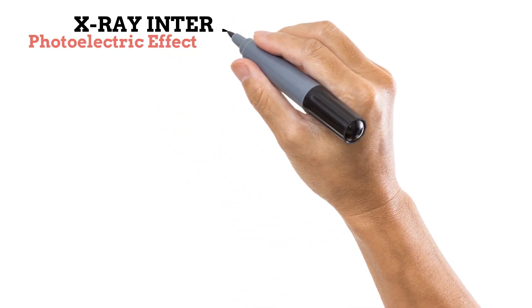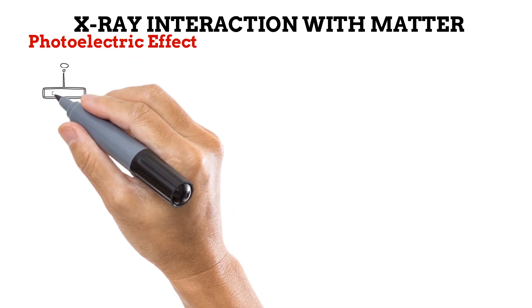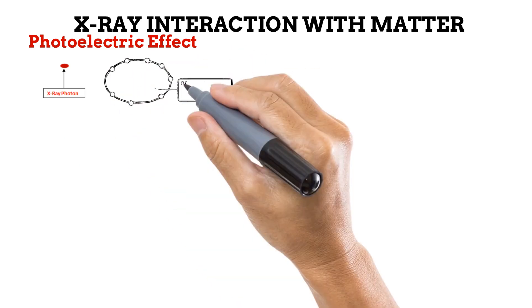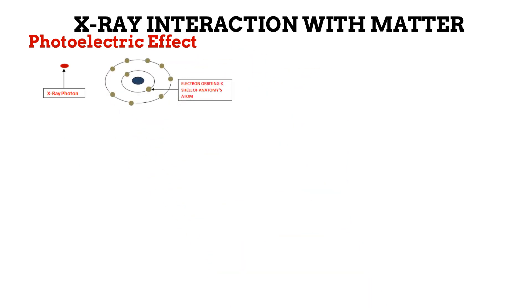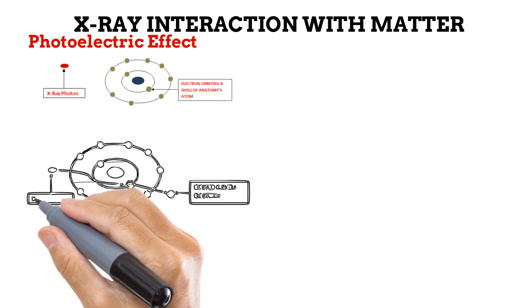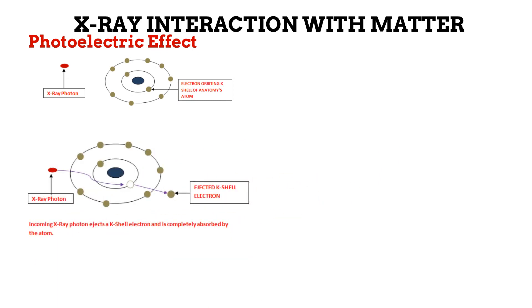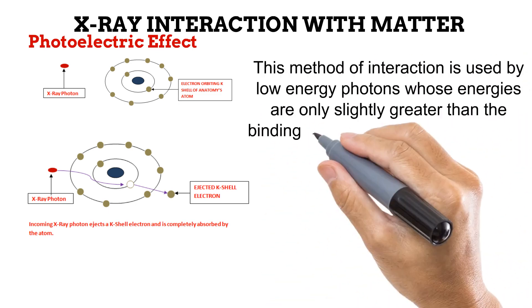We have looked at the two processes through which X-ray photons can be produced. Now let us look at the common processes by which these produced photons interact with the patient's anatomy to produce an X-ray image. The first interaction is the photoelectric effect, or photoelectric absorption. This occurs between the produced X-ray photon and an electron orbiting the K-shell of an atom in the patient's anatomy. The incoming X-ray photon ejects the K-shell electron. After using most of its energy to eject the K-shell electron, the photon does not have enough energy to leave the anatomy's atom, and is thus absorbed completely by the atom.